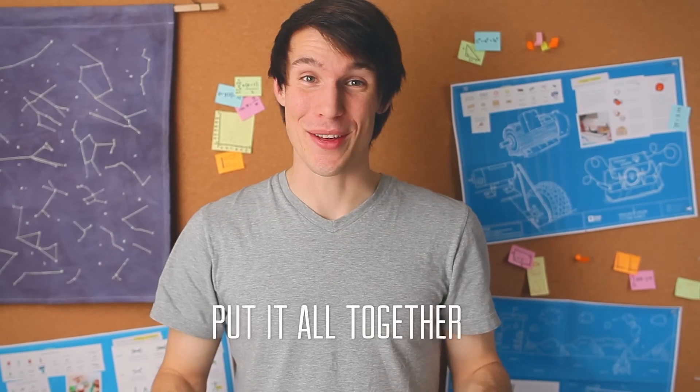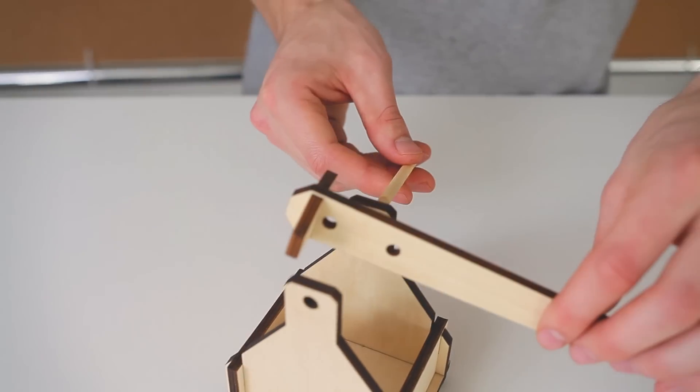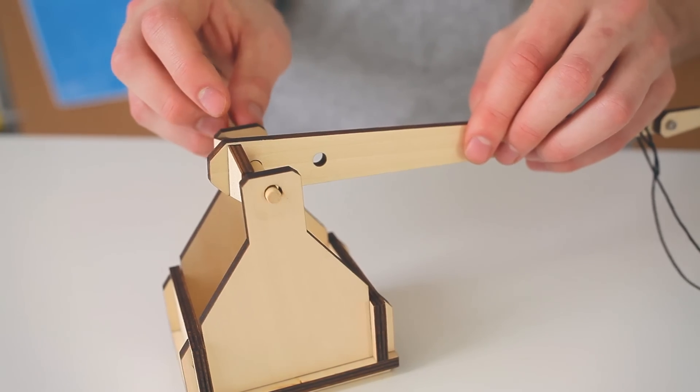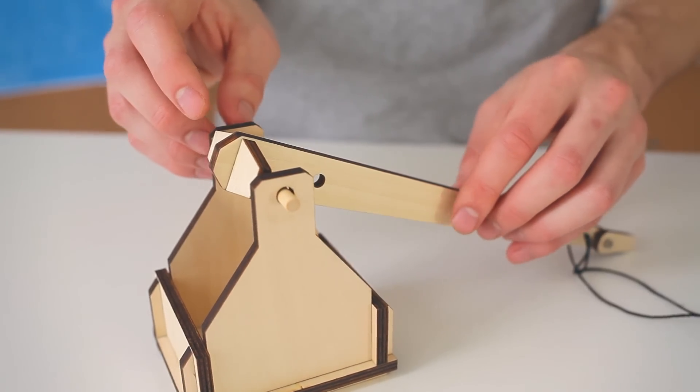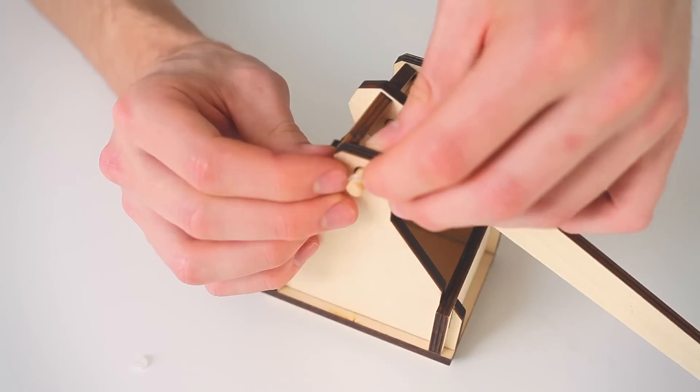Now let's put it all together. Take your lever arm, your short dowel and your counterweight. Slide the dowel through one side of the counterweight, through the last hole in your lever arm and then through the other side of the counterweight. Then to keep the dowel in place take a rubber band and roll it onto each side of the dowel.